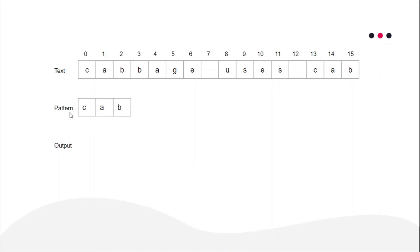Consider the text as the whole world and the pattern as your window — you can see only as much as your window allows. When you look through the window, only those characters of the text that align with the window are visible. You compare the first character of the visible text to the first character of the pattern, the second to the second, and so on. If all characters match, you print the index of the first character of the visible text, which is zero in this case.